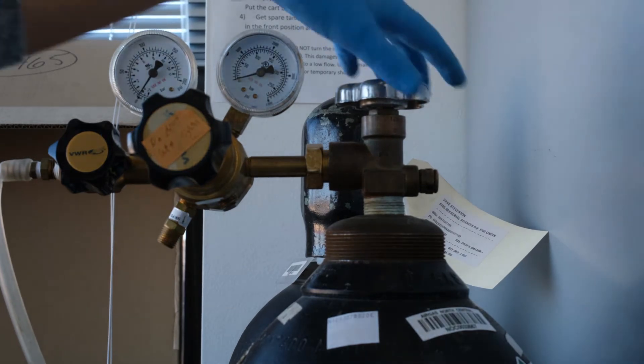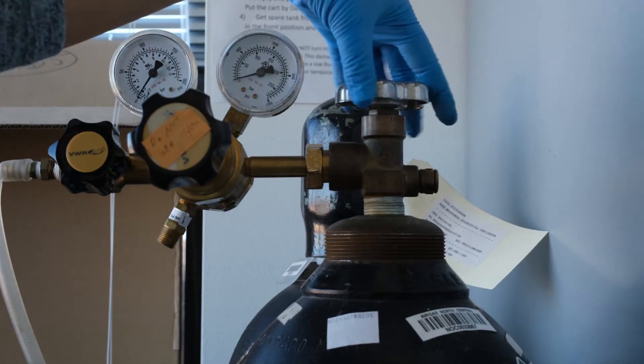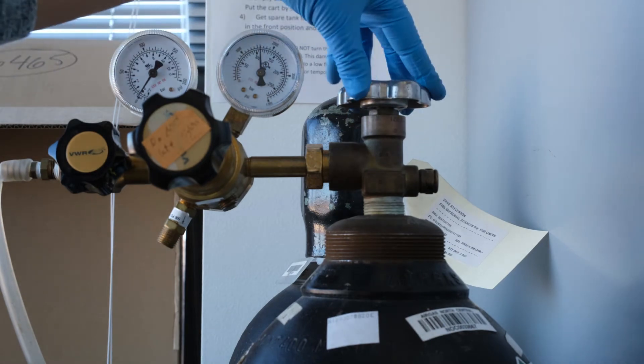Open the nitrogen tank completely by turning the knob to the left. You will see the pressure gauge respond when the tank is open.